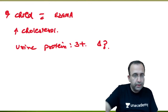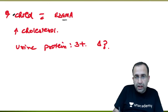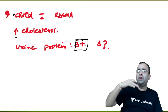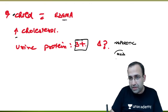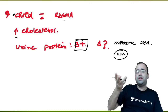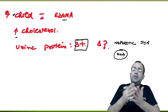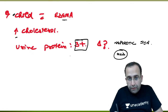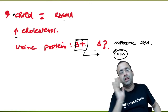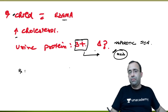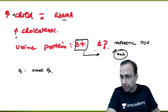Next question: straightforward — a child with edema, hypercholesterolemia, and 3+ urine protein. This is nephrotic syndrome. Options were nephrotic syndrome, nephritic syndrome, Goodpasture syndrome, etc. The most common nephrotic syndrome in children is MCD (minimal change disease). In a child with nephrotic syndrome, we presume MCD and directly start therapy — we do not wait for electron microscopy results.